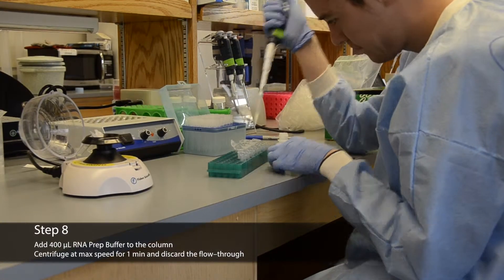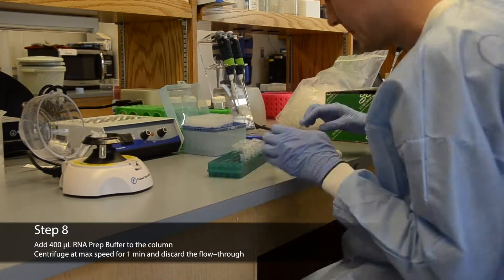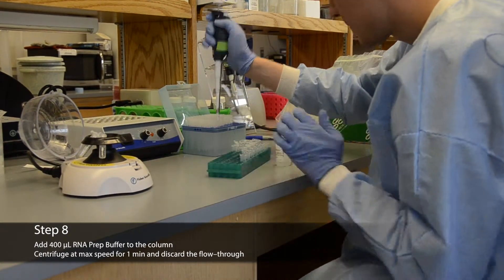Add 400 microliters RNA prep buffer to the column and centrifuge at max speed. Once again, discard the flow through.